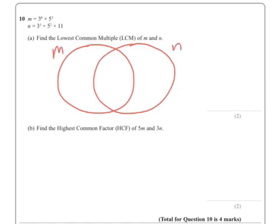Now we've got 3 to the power 4, 3 to the power 3, so we need three 3's in there with the extra 3 there. We've got 5 to the power 3, 5 squared, so we've got two 5's and the extra 5 in there, and we've got an 11 in there.